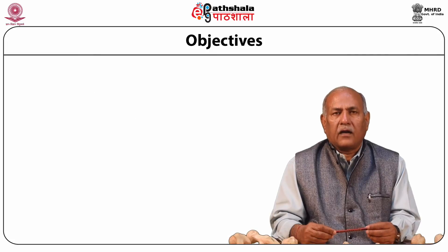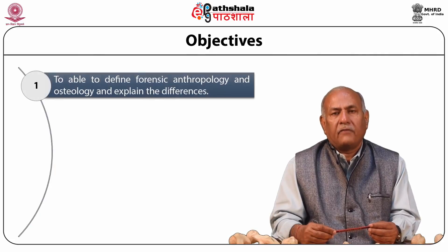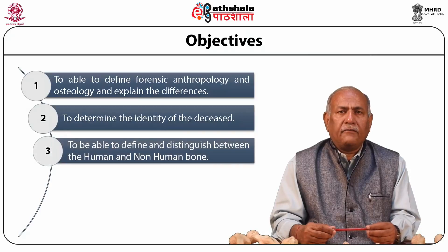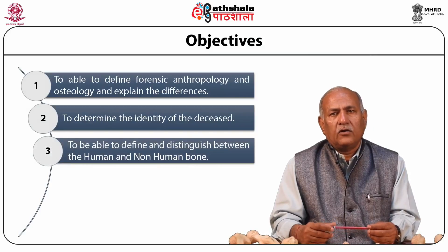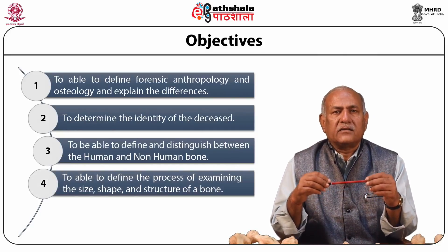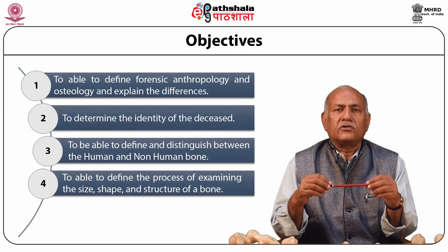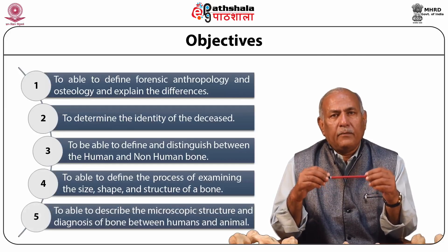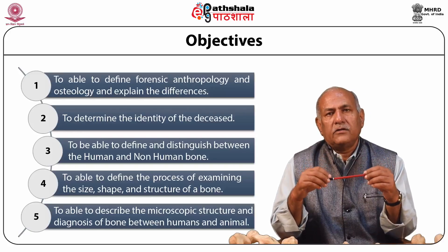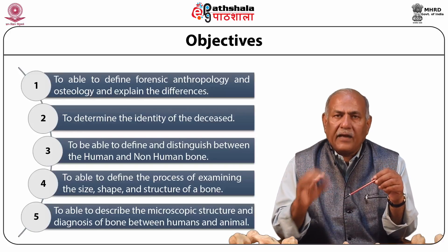The learning objectives are: first, to be able to define forensic anthropology and osteology and explain the differences. Second, to determine the identity of the deceased. Third, to be able to define and distinguish between human and non-human bone, define the process of examining the size, shape and structure of a bone, and describe the microscopic structure and diagnosis of bone between humans and animals.